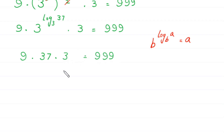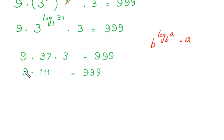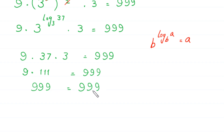Next, 9 times 37 times 3: 37 times 3 is 111, and 9 times 111 is 999, which is equal to 999. You can see that the left hand side is equal to the right hand side. So it is proved that the value of m equals 1 plus log base 3 of 37 over 2 is a valid solution.